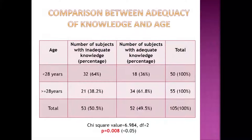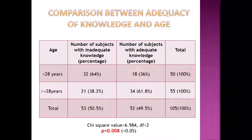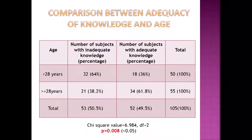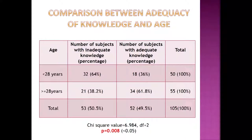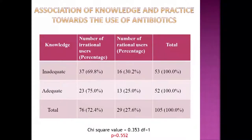When we compared the adequacy of knowledge between the two age categories — less than 28 years and 28 years or more — we found a significant difference between the two groups. The older group, those aged more than 28 years, were found to have more knowledge compared to the younger ones. The younger ones had a pattern of using antibiotics irrationally and also had poorer knowledge regarding antibiotic use.